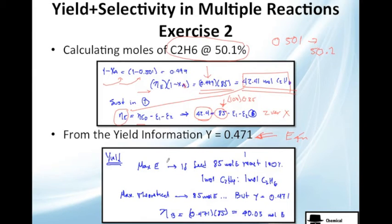Now, the max amount of B, if the feed is 85 moles and reacts 100%, we're going to have 1 mole of C2H4 per each mole of C2H6. So, the maximum theoretical will be 85, of course. Because we are going to produce, if we use 1 mole of E to 1 mole of B, we'll have 85 moles of B. We'll produce 85 moles of the desired product. But the yield I tell you is only 0.471. So, we are going to calculate the amount of moles with the yield data.